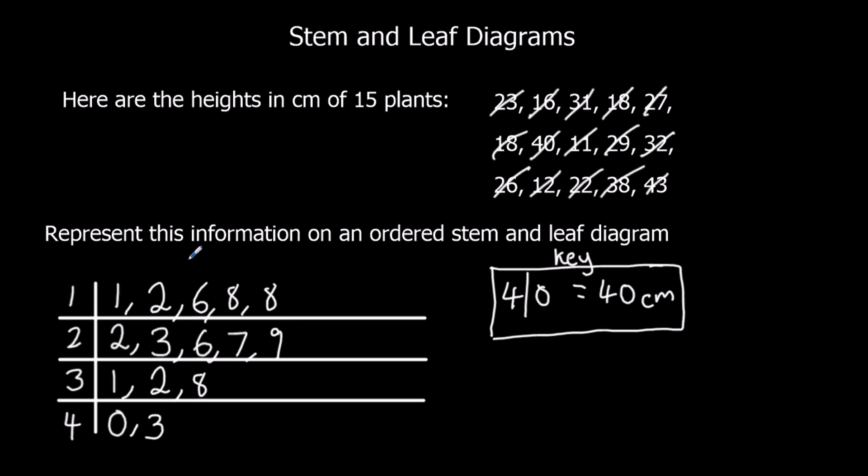So there we go - we've got all the numbers into the stem and leaf diagram. The only thing to do now: I've got my key, I've got the numbers all in order, starting at the lowest, going up in size order. Just check there's the right number - there should be 15. So 1, 2, 3, 4, 5, 6, 7, 8, 9, 10, 11, 12, 13, 14, 15. I've got all the numbers done. They're all in order, tens split up from the units - that's a complete stem and leaf diagram.